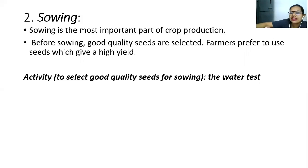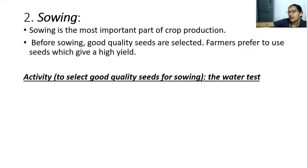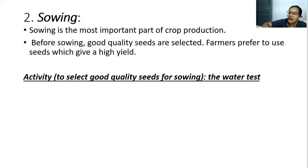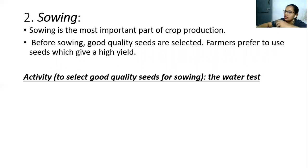Before sowing, good quality seeds are selected. Farmers prefer to use seeds that give a high yield. Low quality seeds will give low quality plants and again low quality seeds — it is not going to be profitable in the market and it is going to ruin the farmer's life.